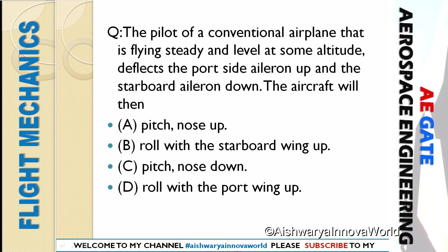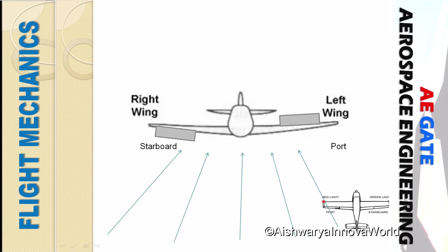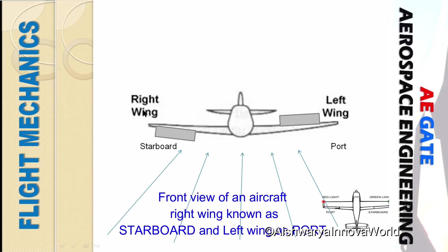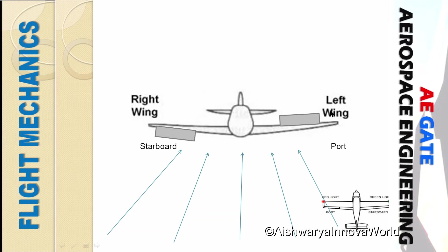Let us see the figure displayed on your screen. This is an aircraft where the right wing is called starboard and the left wing is called port side. The starboard aileron is deflected downwards as given in the question, and the port wing aileron is deflected upward. These are the free stream conditions.